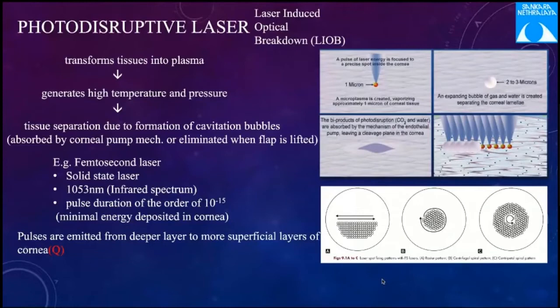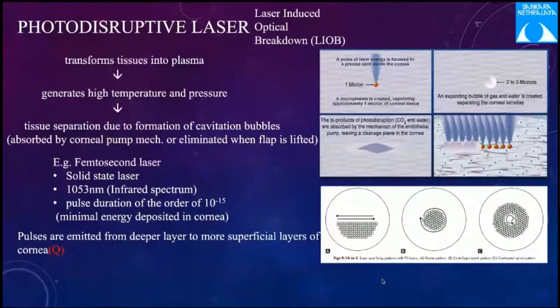The reason pulses go from deeper to superficial layers is that as bubbles form, corneal haze decreases clarity. Working from deeper to superficial allows you to see the deeper layers clearly while the procedure is being done. Reversing this order would obscure the view as well as the penetration of the laser.